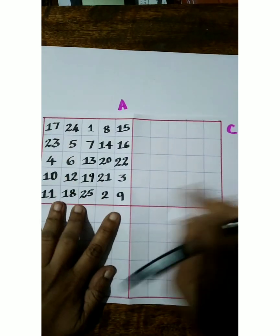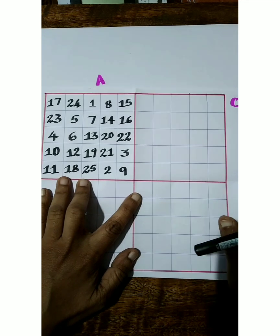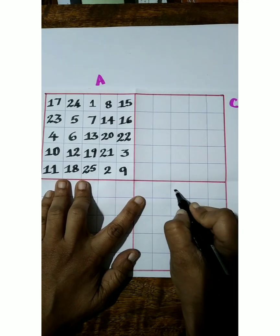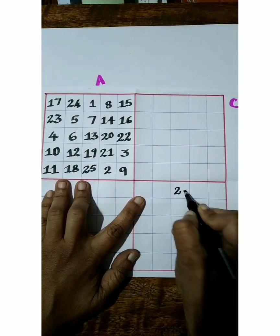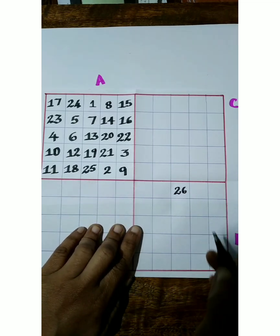Next, after 25, we are moving to box B, and we have to mark here 26, and here last number is 50.